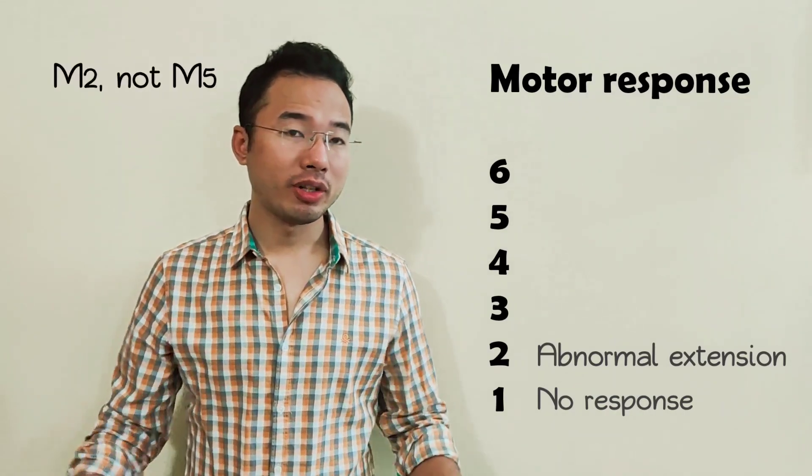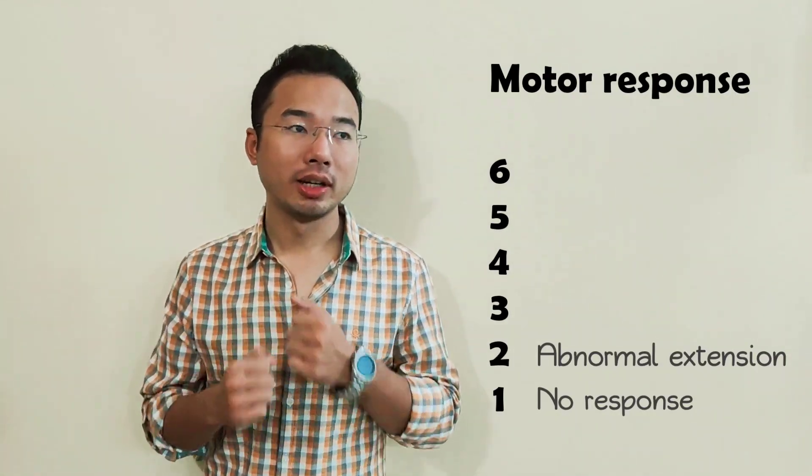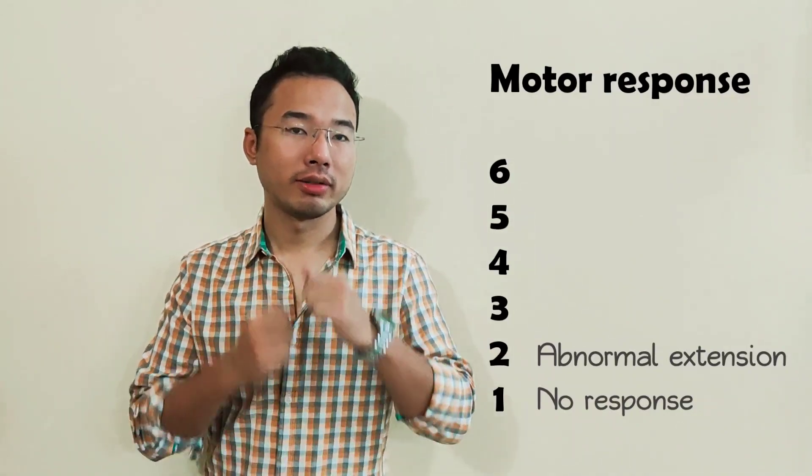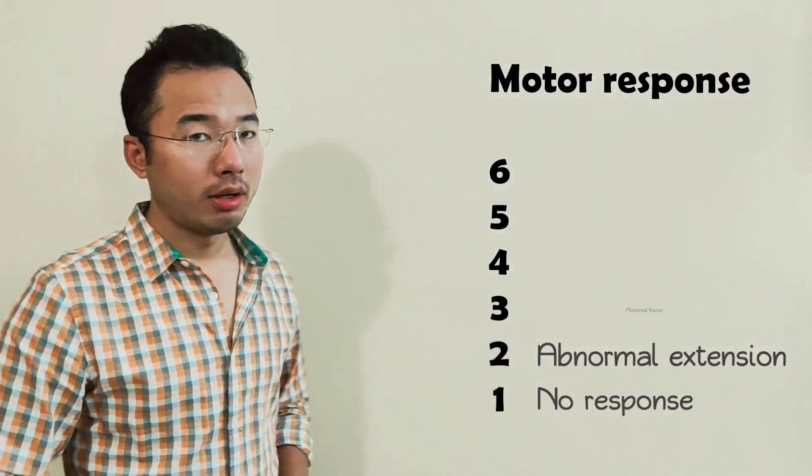And then, since everyone's dancing, I get into the mood and I start moving my hands like this. But I'm still standing there in the corner, I'm not moving my legs. My hands are flexed, moving like this. You know, just... I see everyone dancing, so I start doing like this. So that's flexion. That's M3.